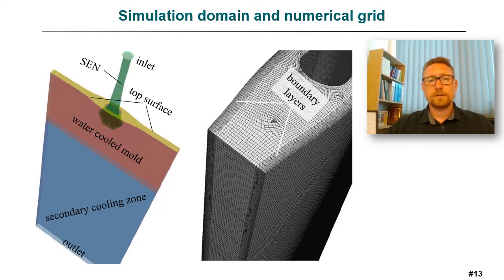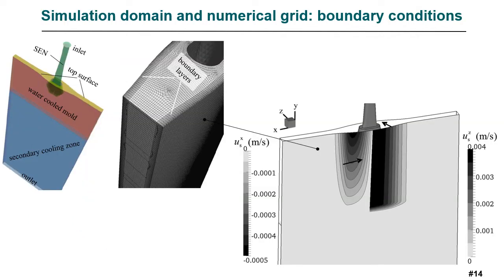The simulation domain consists of submerged entry nozzle, water-cooled copper mold, and the secondary cooling zone of the slab. The numerical grid is constructed in such way that we have refined boundary layers to resolve the solidification front and corresponding magnetohydrodynamics boundary layers. Important settings are the boundary conditions for the solid velocities on the surface of the copper mold and the strand. Currently they are defined by continuous casting speed.